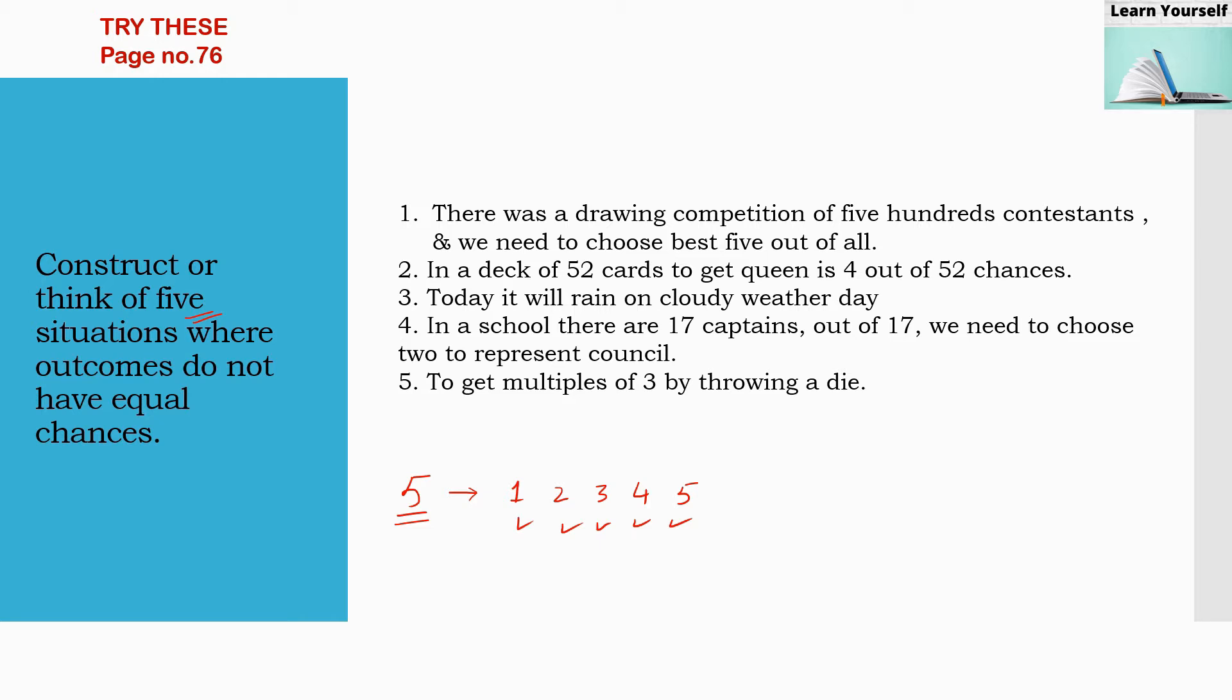First is there was a drawing competition of 500 contestants and we need to choose best 5 out of all. Here we are not writing winning or the first, we needed best 5. So the chances of winning are not equal.